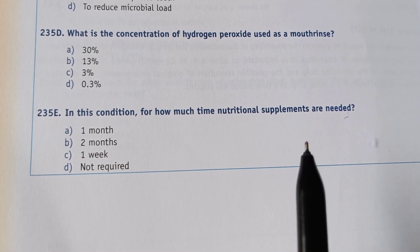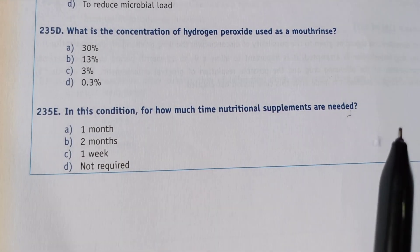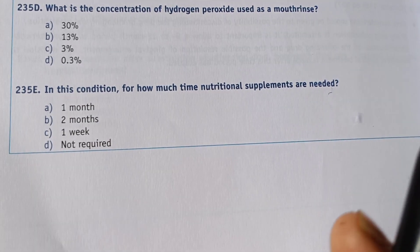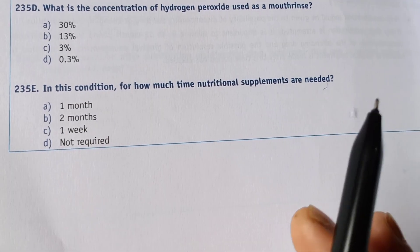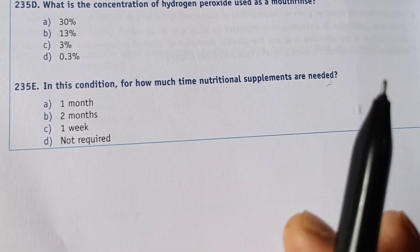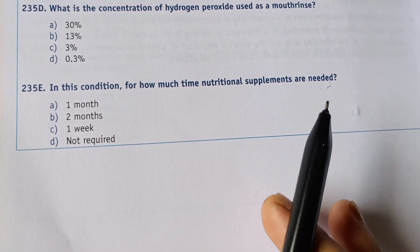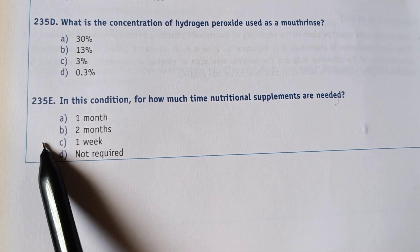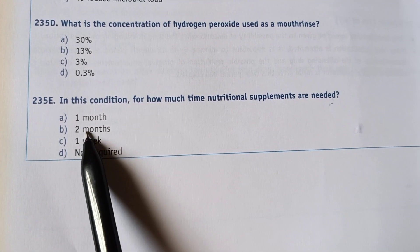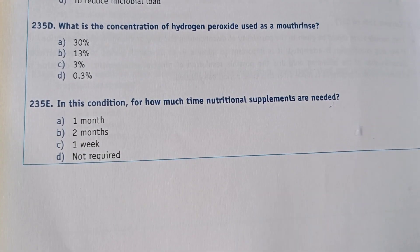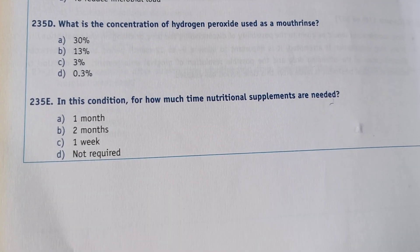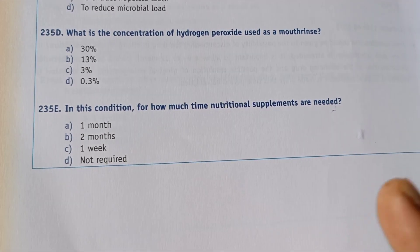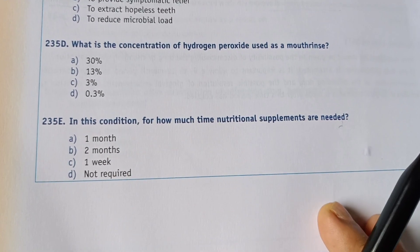Next question: in NUG, for how much time are nutritional supplements needed? Options are: 1 month, 2 months, 1 week, or not required. The right answer is 2 months — nutritional supplements are needed for 2 months.